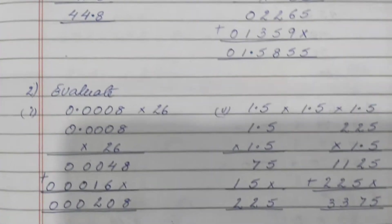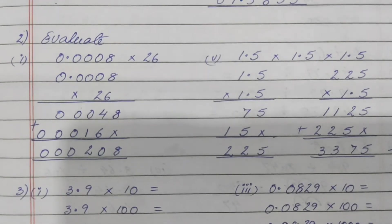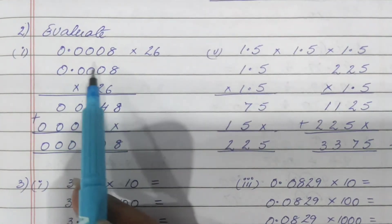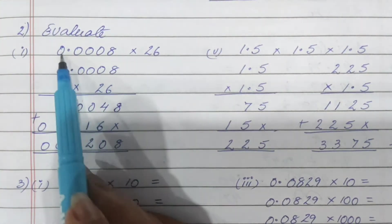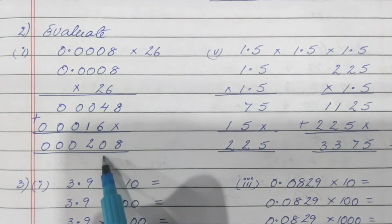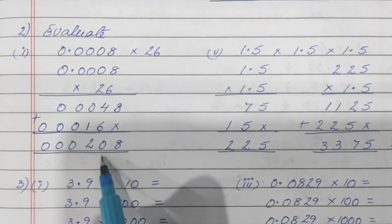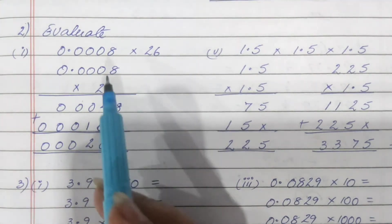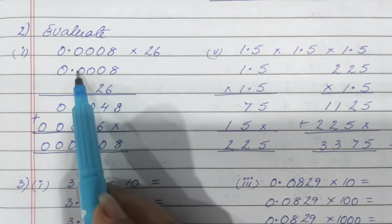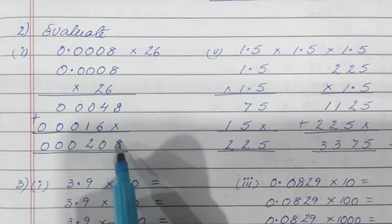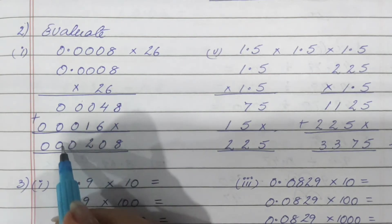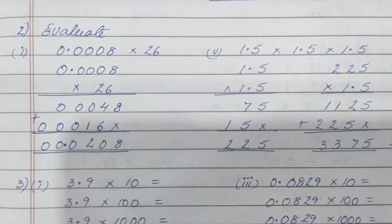Question number 2 is similar. You have to evaluate — that means finally get the answer. There is multiplication. Normal multiplication the way we do it, count the number of decimal places: 1, 2, 3, 4. And in the answer also count 1, 2, 3, 4 and put the decimal.